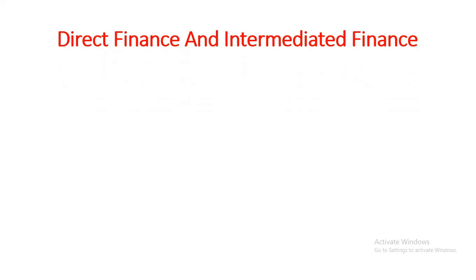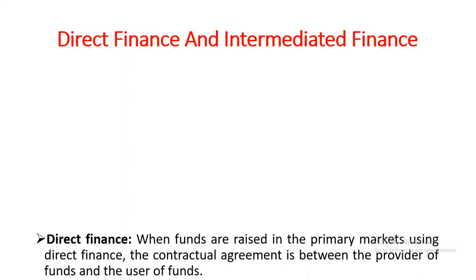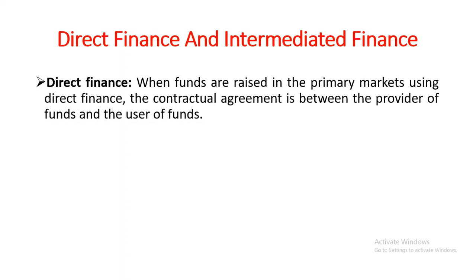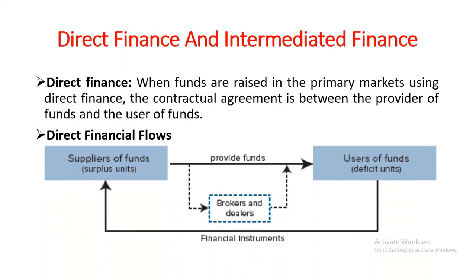There are differences between direct finance and intermediary finance. In direct finance, funds are transferred from savers to borrowers directly through primary markets, and there is a contractual agreement between providers of funds and users of funds. The borrowers or users of funds sell financial instruments to the suppliers of funds, or surplus unit, with the help of financial instruments.